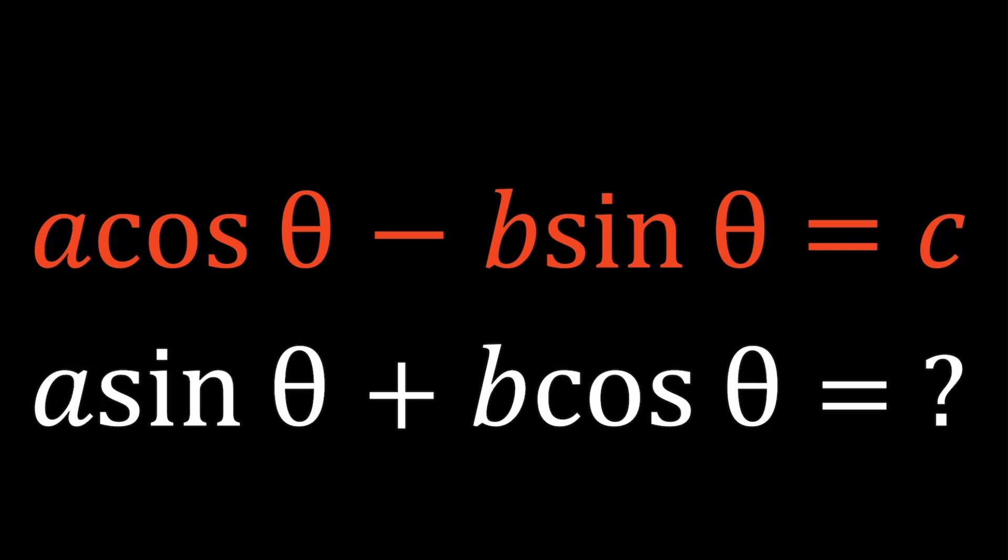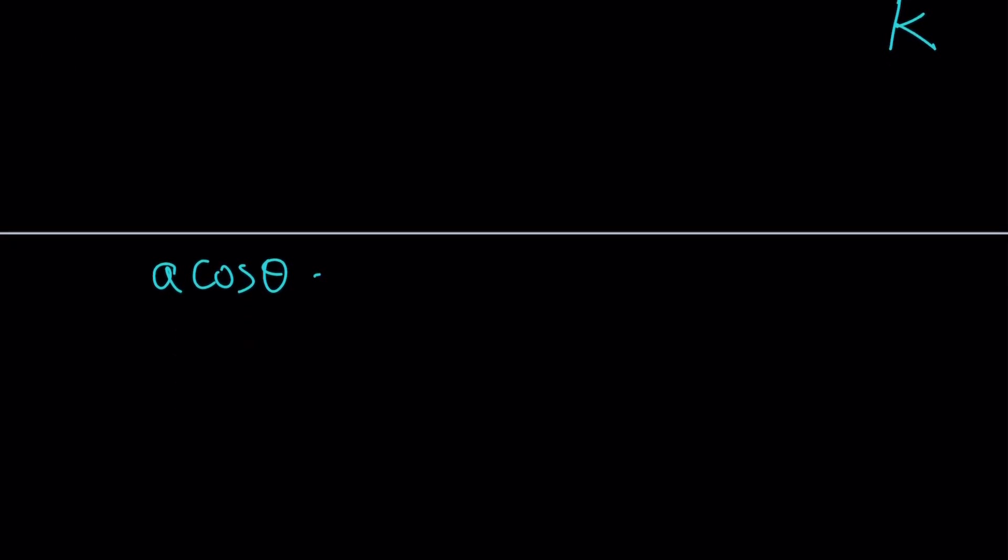Okay, so here's what we're going to do. Since I'm trying to evaluate A sine theta plus B cosine theta, let's go ahead and set it equal to something. So replace the question mark with some constant because I expect to get a constant from here. Let's call it K. So now I have A cosine theta minus B sine theta is equal to C. And I'm supposed to find A sine theta plus B cosine theta in terms of A, B, C. And we called it K.